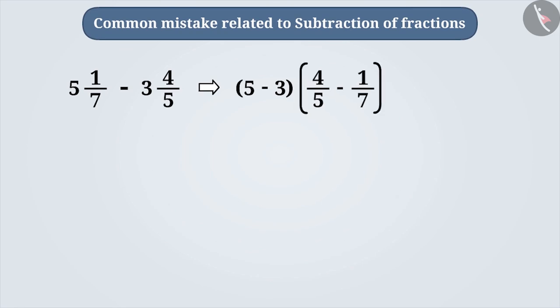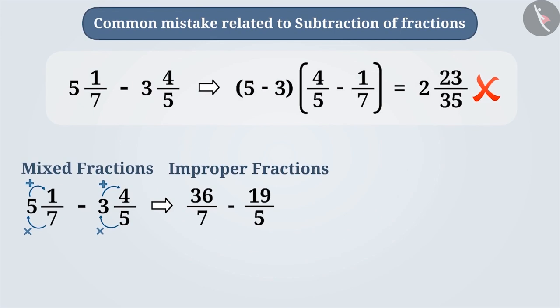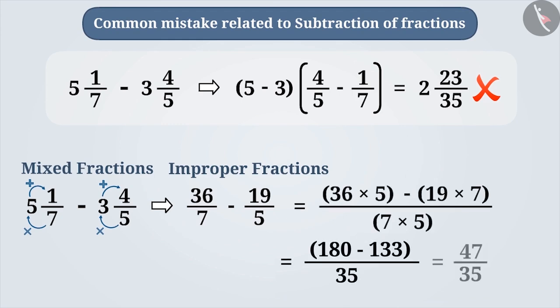By doing so, we get an incorrect answer. The correct way to do this is to convert the mixed fractions into improper fractions. Then, the equivalent fractions of these fractions is found by making their denominators the same. Then, these fractions are subtracted.